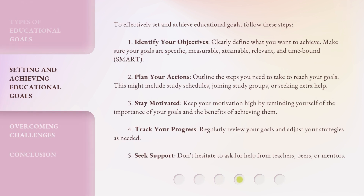To effectively set and achieve educational goals, follow these steps. 1. Identify your objectives: clearly define what you want to achieve. Make sure your goals are specific, measurable, attainable, relevant, and time-bound — SMART. 2. Plan your actions: outline the steps you need to take to reach your goals. This might include study schedules, joining study groups, or seeking extra help.